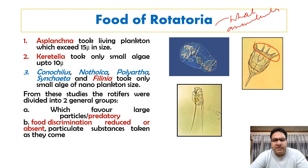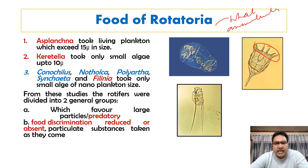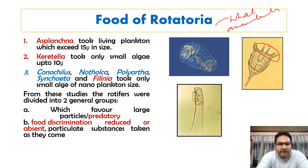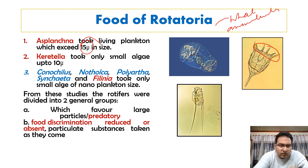Experiments were conducted using different kinds of dyes to understand food habits. These experiments were conducted on Asplanchna and Polyartha. It was noticed that some of them did not accept these suspensions, whereas others readily accepted them. Planters of different sizes were used, and it was found that Asplanchna took living plankton which exceeded 15 microns in size.